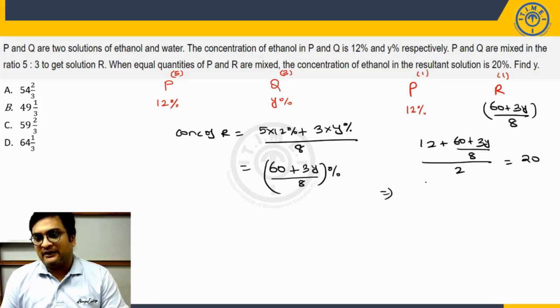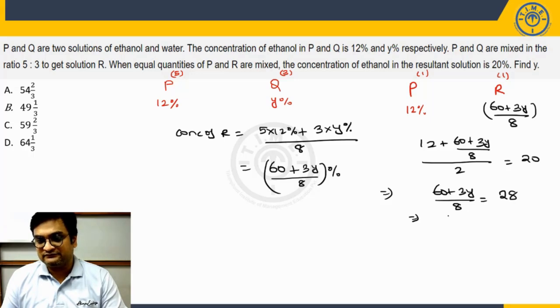When you cross multiply, you will get 40, 40 minus 12 is 28, 60 plus 3y upon 8 will give you 28. When you cross multiply one more time, 8 into 28 will give you what? 162, 24. 224 minus 60 will give you 164. Thus can I say the value of y will be 164 upon 3 percentage.